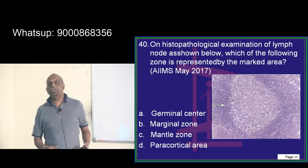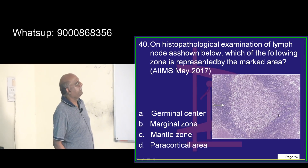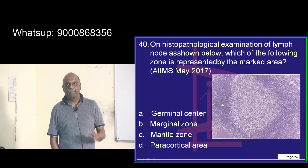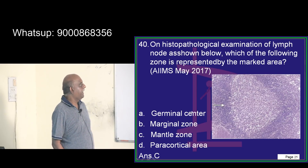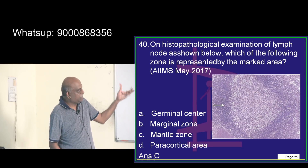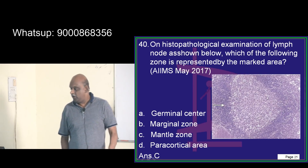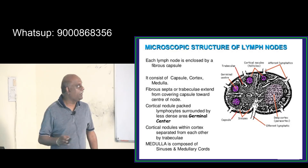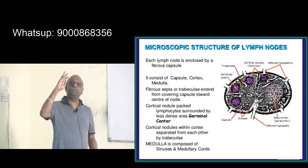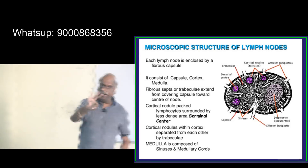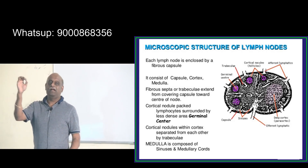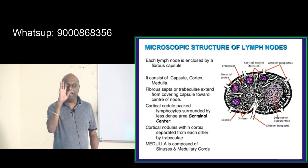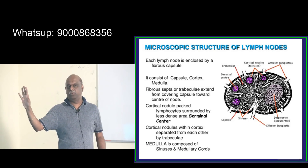On histopathological examination of the lymph node, the zone being marked represents the mantle zone. You have to be 100% sure on the histology of thymus, lymph node, and spleen — these three organs. Take this as an inspiration to read these three histologies immediately, from whichever book you have.